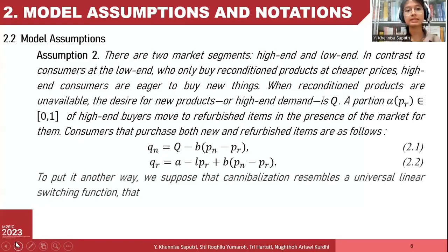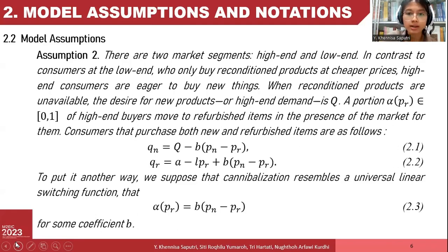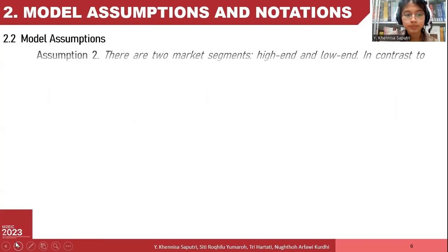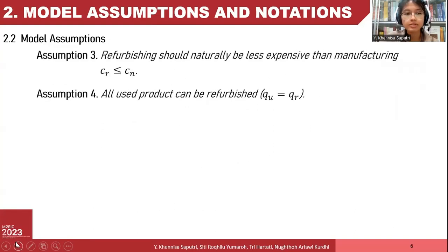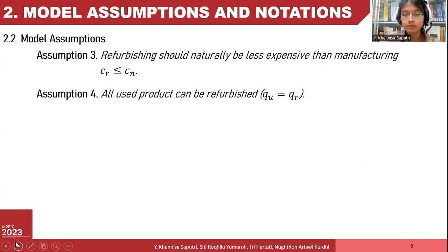The second assumption is that we have two market segments: high-end and low-end markets. Another assumption is that refurbishing should naturally be less expensive than manufacturing. And the last assumption is that all used products can be refurbished.